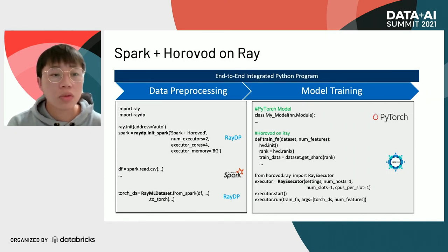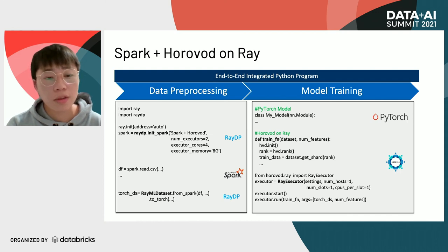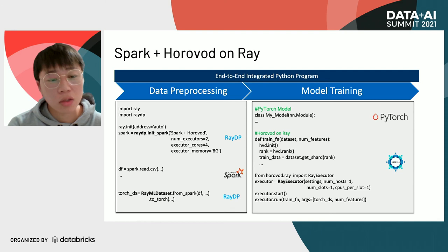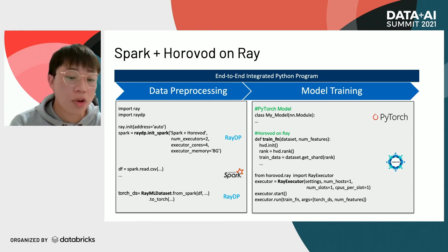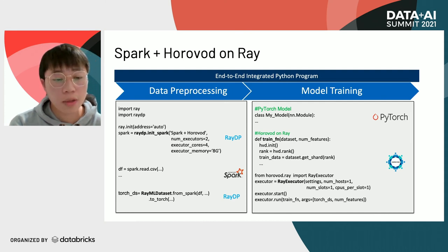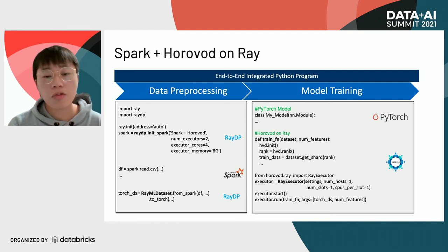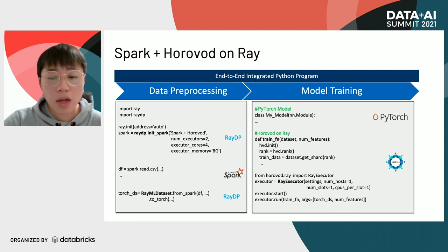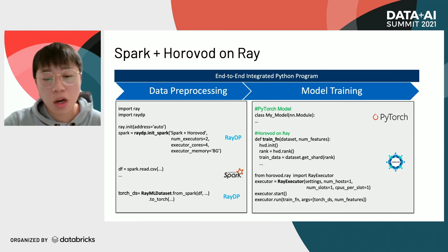This example shows how to integrate Spark and Horovod on top of Ray. Horovod is a popular distributed model training framework, and it also supports running on top of Ray. The left side is similar to what we've seen before — we use Spark for data processing and create an ML dataset from the Spark DataFrame, then convert it into a PyTorch ML dataset. On the right side, we first define the train model, then define the Horovod train function. In the function, we get the shard data with the rank ID from the PyTorch ML dataset. Then we create a Horovod cluster with the Ray executor, and do our distributed model training with Horovod on top of Ray.